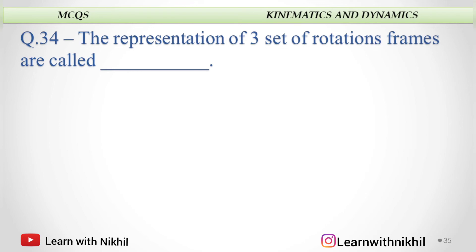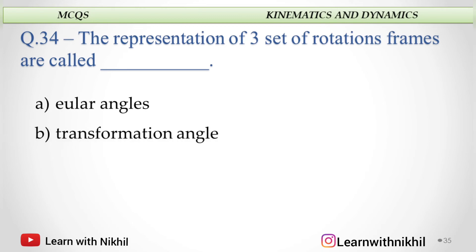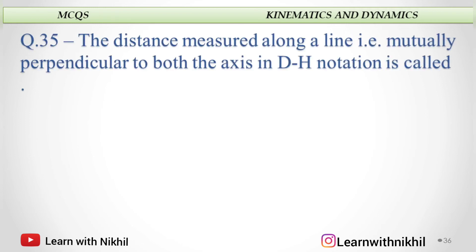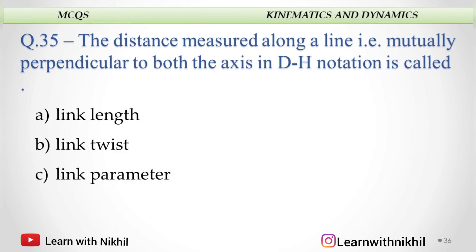The representation of three sets of rotations of a frame are called: Euler angles, transformation angles, translation angles, or orientation angles. The answer is Euler angles. The distance measured along a line mutually perpendicular to both axes in the DH notation is called: link length, link twist, link parameter, or joint variable. The answer is link length.